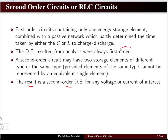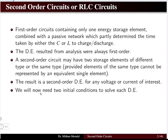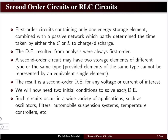In the first order circuit we had a first order differential equation. Now for second order circuits we have a second order differential equation for any voltage or current of interest. Voltage and current are the variables we need to determine. We will also require two initial conditions — unlike the first order circuit where one initial condition was sufficient.